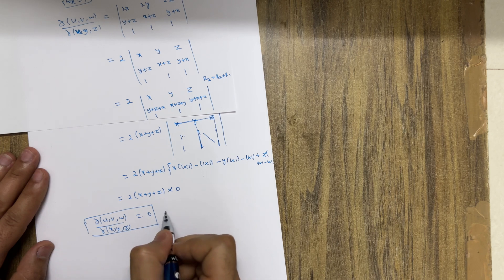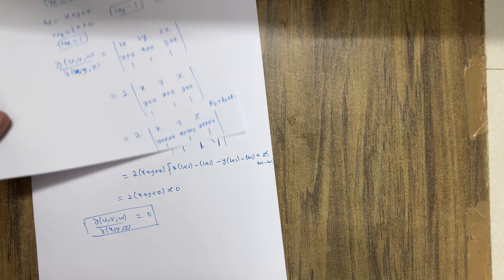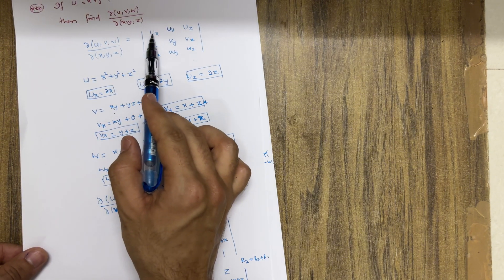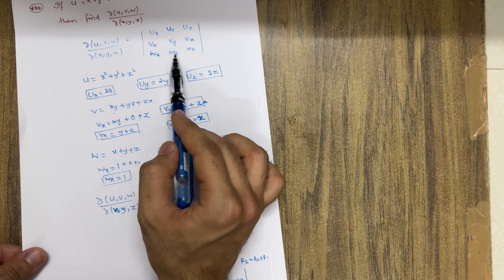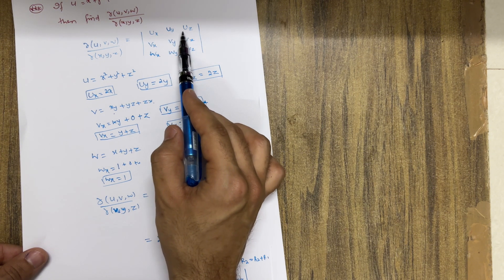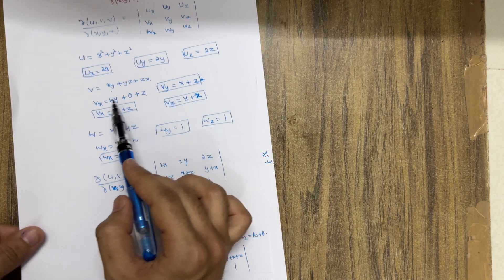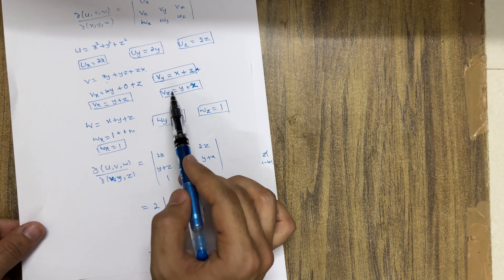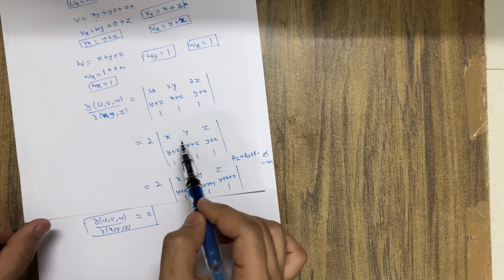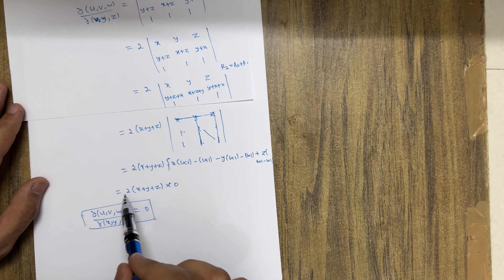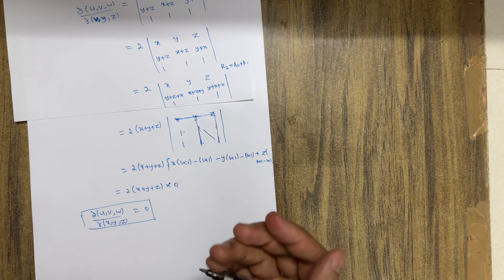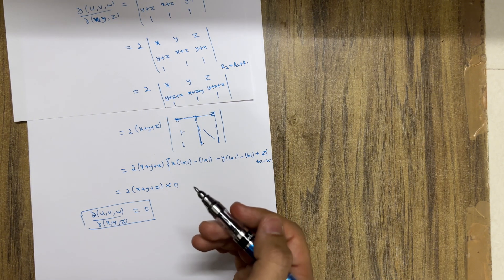This is the answer for this particular problem. We applied the Jacobian formula, calculated all partial derivatives ux, uy, uz, vx, vy, vz, wx, wy, wz, assembled them in the matrix, applied row transformations, and after solving the determinant we got ∂(u,v,w)/∂(x,y,z) = 0. You should surely practice similar varieties on Jacobians. Thank you.